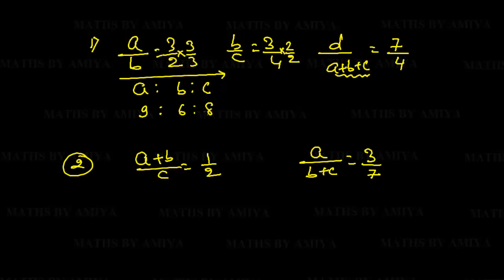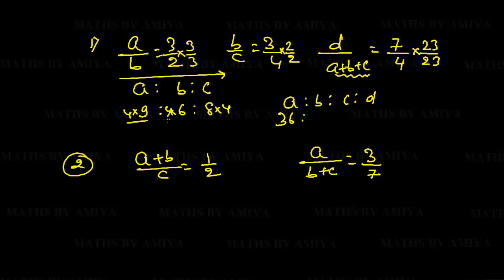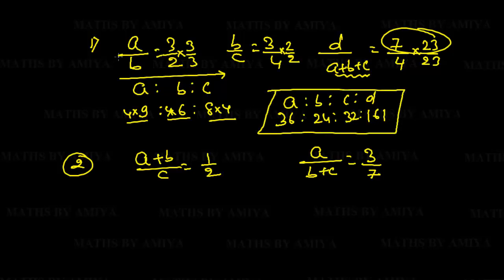The relation A+B+C from our merged ratio is 9+6+8 = 23. We multiply 4 through each term of A:B:C (scaling up) and place 23 on the D side. This gives A:B:C:D as A = 36, B = 24, C = 32, and D = 161. This is the merged ratio of the three given ratios.